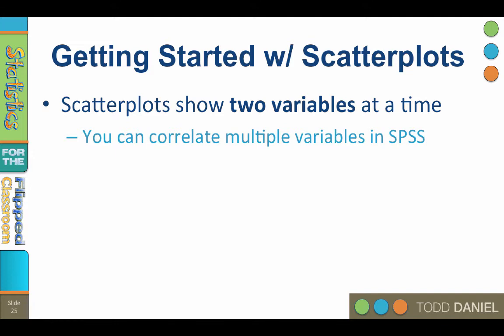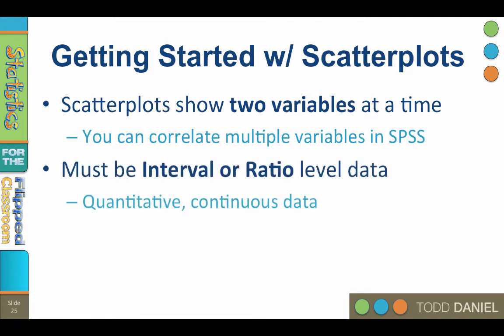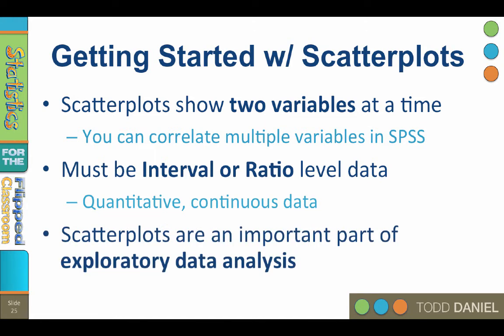It is possible to create multiple scatter plots among multiple variables using a matrix scatter plot, and we will create a matrix scatter plot in SPSS a little later. All scatter plots will use interval or ratio level data, called scale level data in SPSS, because they all refer to quantitative continuous data. You should create a scatter plot of your data before hypothesis testing as part of exploratory data analysis.